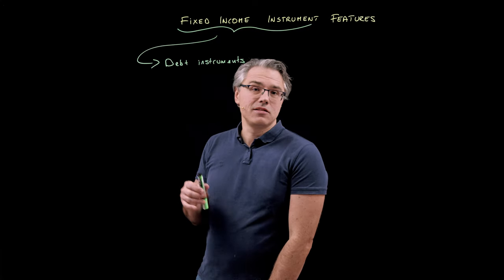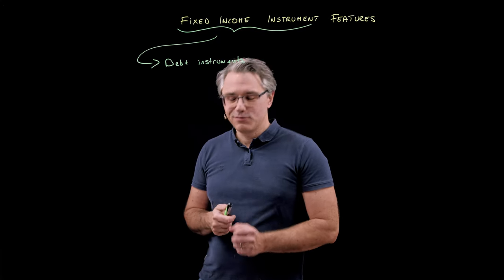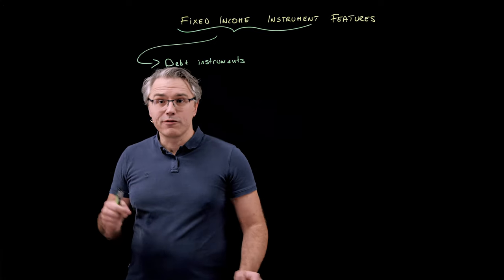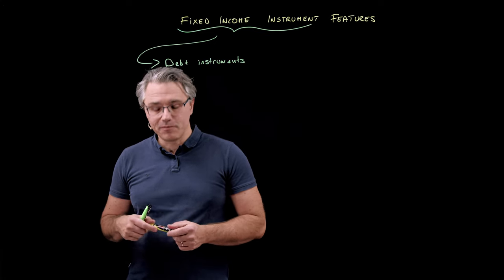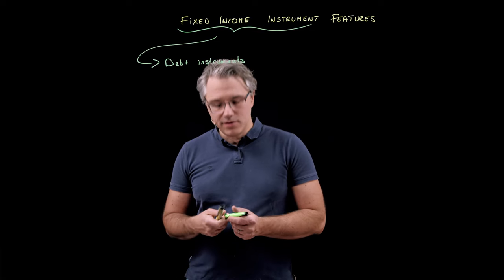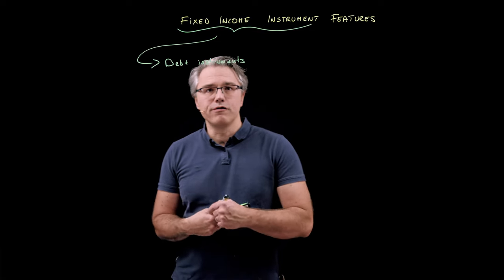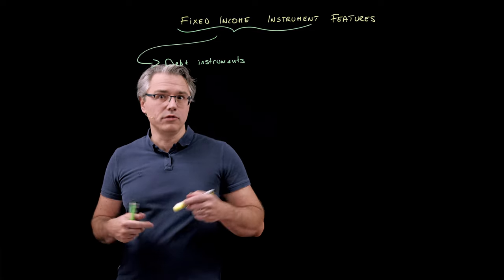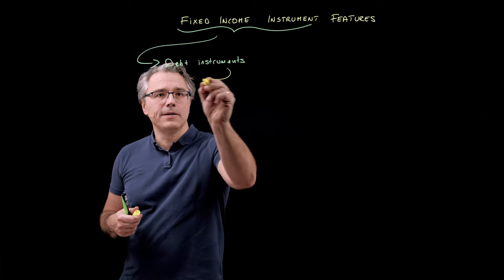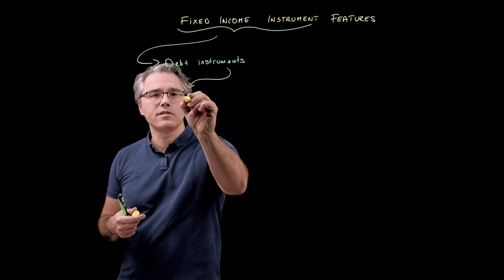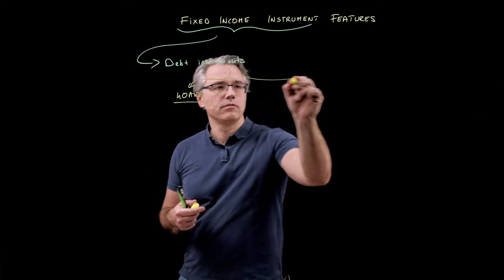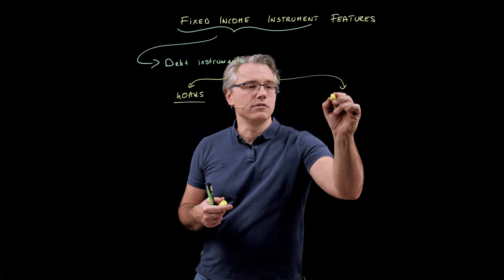This is in opposition to dividends, which you receive on shares, which are of course a variable cash flow. Debt instruments fall into two broad categories. We differentiate between loans and what is generally called bonds.